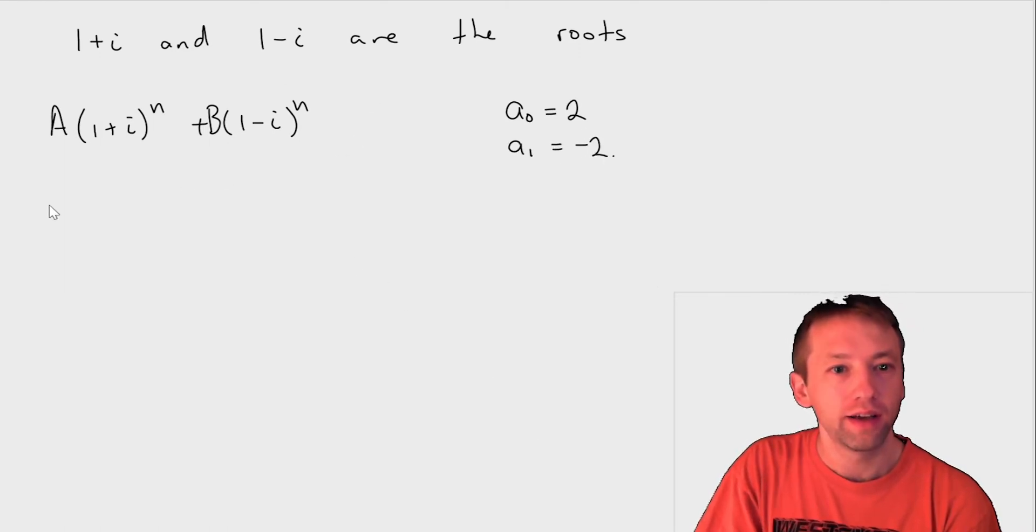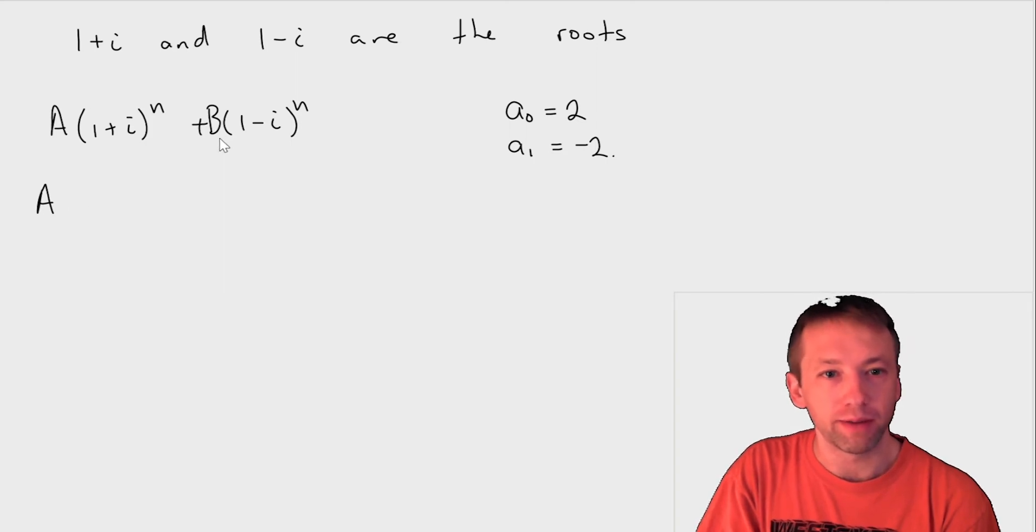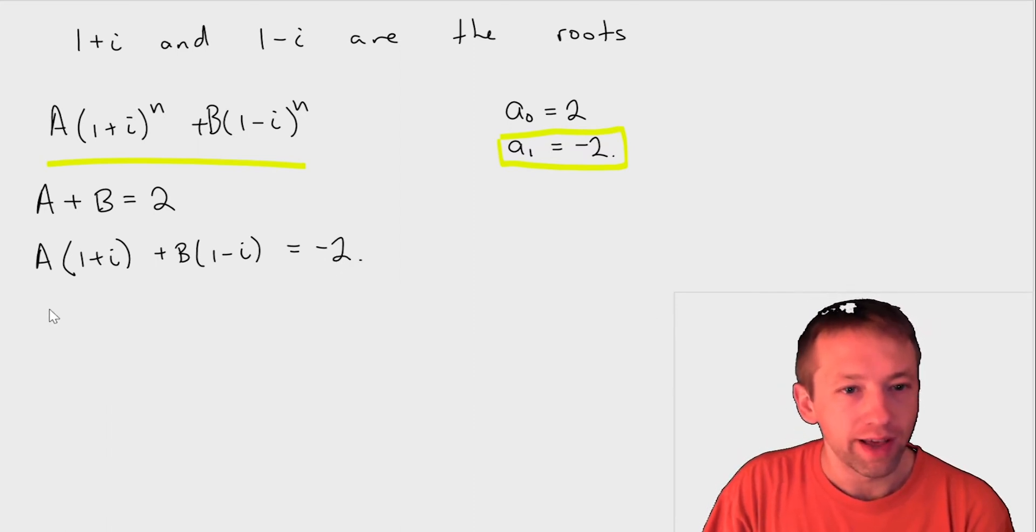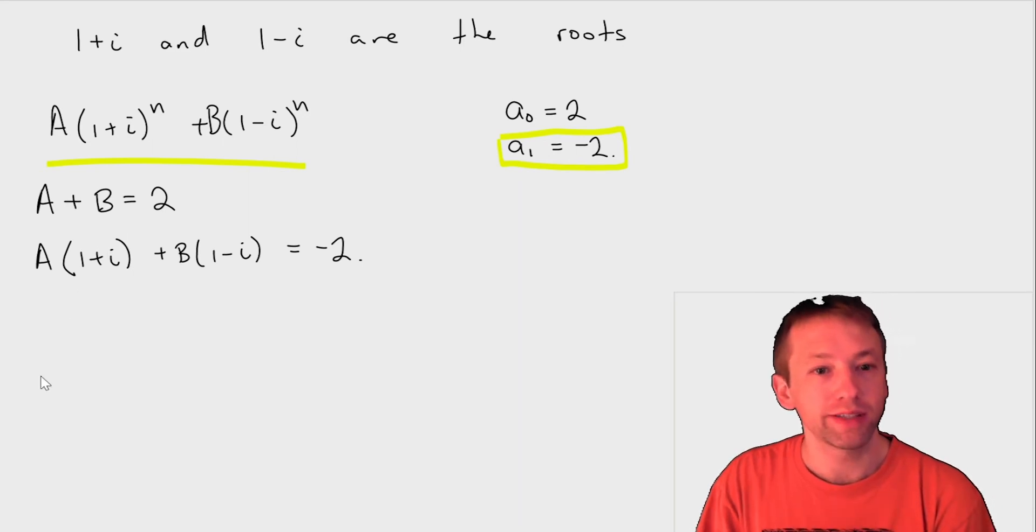So when I plug this in, I get, when I plug in 0, I get A, and then I've got (1 + i)^0, which is 1, and then I've got plus B, (1 - i)^0, which is again 1, and that's supposed to equal 2. And then I've got A times, this time, (1 + i). So this is when I'm plugging in n = 1 into here. So plus B times (1 - i) equals -2. So the equations we have are that A + B is 2, and then this equation here, A(1 + i) + B(1 - i) is equal to -2.